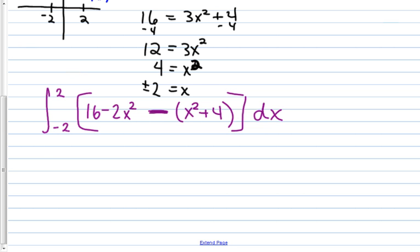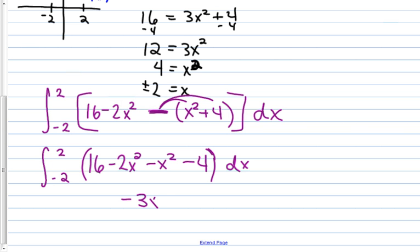Now, parentheses in the second equation are important, because they will remind you to distribute this negative, the minus. And then, of course, this is all being integrated with respect to x. And certainly, you can do this by hand, but like I mentioned before, we're at a point where this part should be something we know how to do. So this is 16 minus 2x squared, and I'm just simplifying real quick. Minus x squared, minus 4.